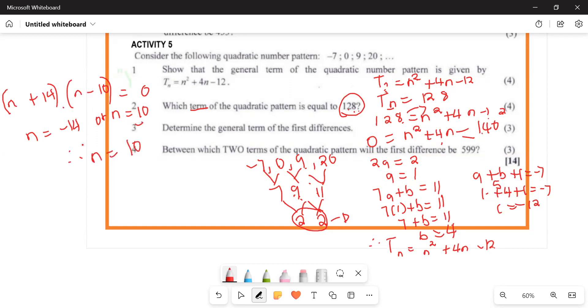Since n cannot be negative in this context, we conclude n = 10. Therefore, the 10th term equals 128.